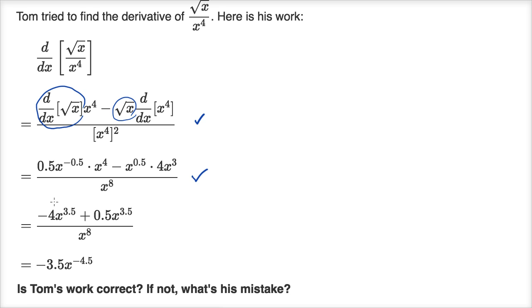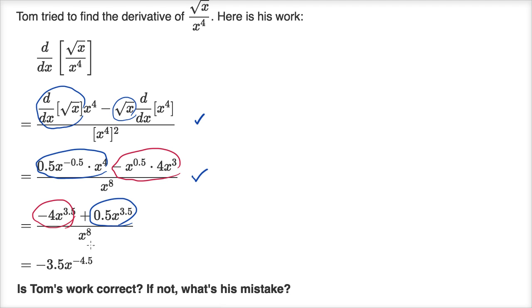All of this looks algebraically right. x to the negative one half times x to the fourth — let's see, that simplifies correctly using exponent properties. And then everything is in terms of x to 3.5, so we're going to have negative 3.5 x to 3.5, and using exponent properties — actually it looks like he did everything correctly. This is the right answer. So his work is correct, he did not make any mistakes.